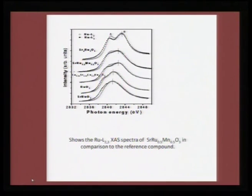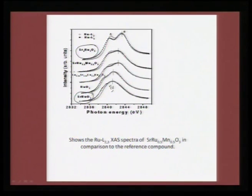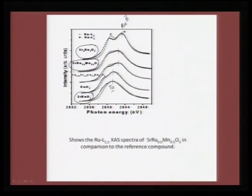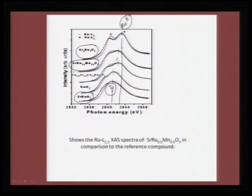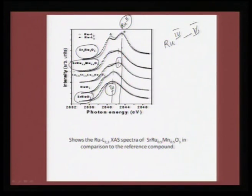Instead of 4+ ruthenium, there seems to be a shift to a higher valence state because the shift is more towards higher energy. Therefore it should be ruthenium shifting from 4+ to either 5+ or 6+. So let us take a comparison: we will compare it with SrRuO₃ which is in the 4+ state and here is another well-known Sr₄RuO₉ which actually shows ruthenium in the 5+ state. Now if you compare the SrRu(Mn) signal, it is neither in the SrRuO₃ state (4+) nor in the Sr₄RuO₉ state (5+).